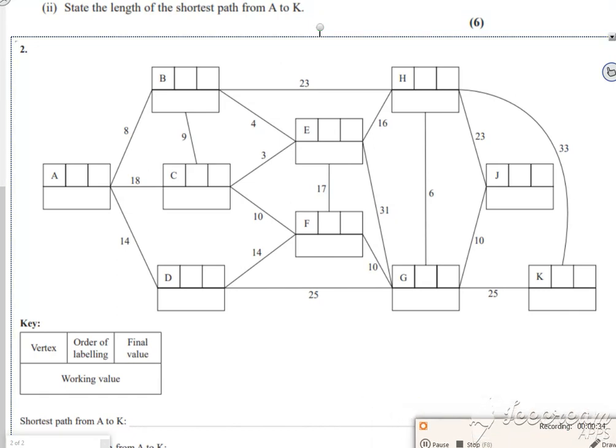Remember, Dijkstra's doesn't just do the shortest path from A to K, it does the shortest path from A to everywhere else in the network. Let's do this then. I set the first one, this is number one. I've not gone anywhere so it's zero, and then I look at everything going out of A.